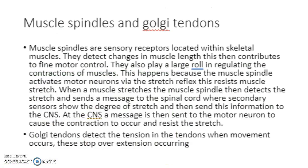Muscle spindles are sensory receptors located within the skeletal muscles that detect changes in muscle length, contributing to fine motor control and regulating muscle contraction. The muscle spindle activates motor neurons via the stretch reflex to resist muscle stretch. When a muscle stretches, the muscle spindle detects the stretch and sends a message to the spinal cord, where secondary sensors gauge the degree of stretch and send this information to the CNS, which then sends a message to the motor neuron to cause contraction and resist the stretch. The Golgi tendon organ detects tension in the tendons when movement occurs and prevents overextension.